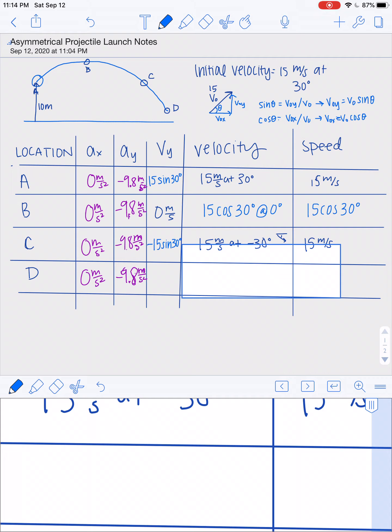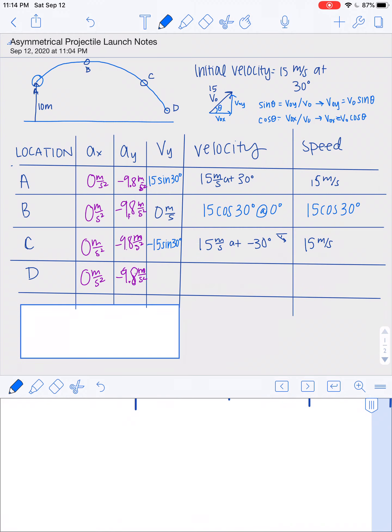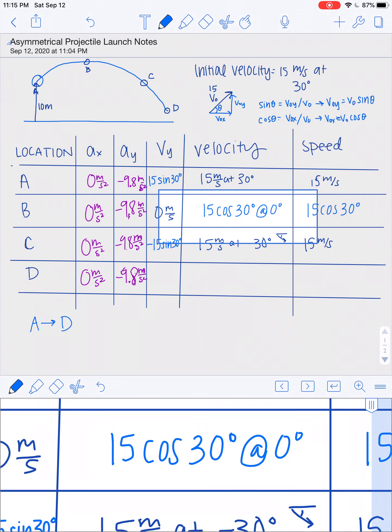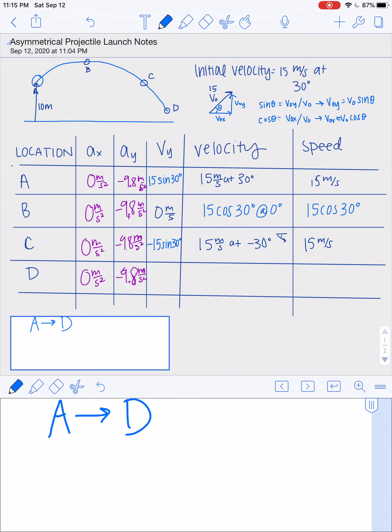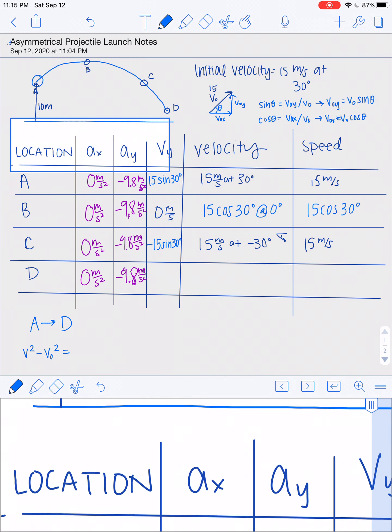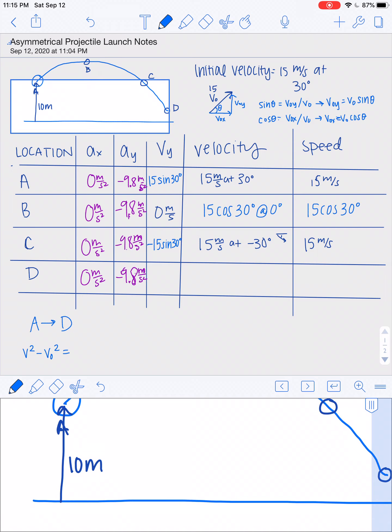Now, to solve for the velocity at D, we will need to do some kinematics. And I am picking to go from A to D. Really, you could go from C to D. You could go from B to D. You could do several different things. I'm choosing to go from A to D. What's nice is that at D, I already know what my x component is. It's still 15 cosine 30. I still know what that x component is, so I just need to solve for the y component. And I also know what my displacement is, because I know that A is 10 meters above point D.